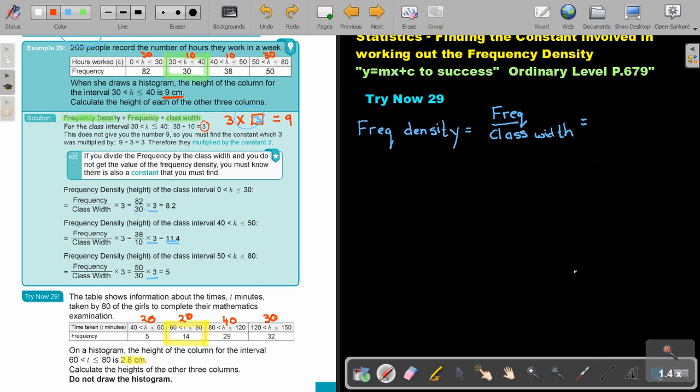So if I'm going to take the frequency of that one, what is the frequency? 14. And I divide it by the class width, 20. I'm going to get 0.7. But can you see, they said 2.8. So in like primary school, I must say 0.7 multiply what will give me 2.8? That constant.